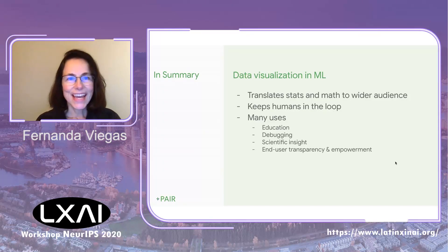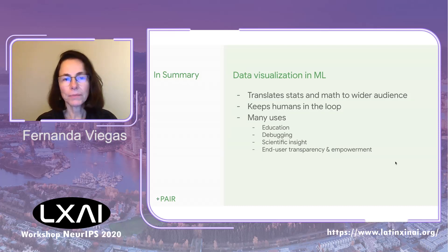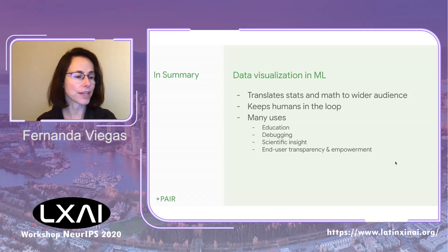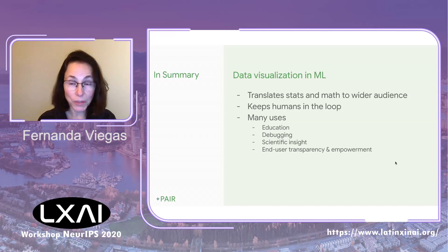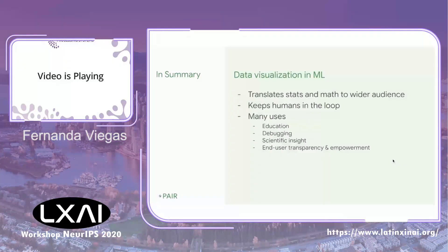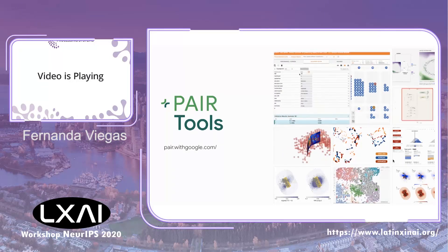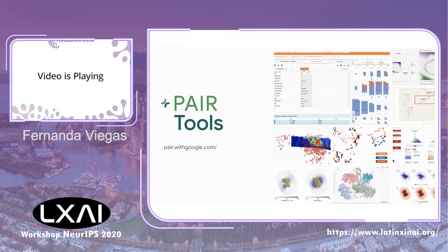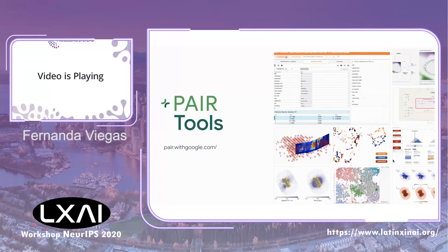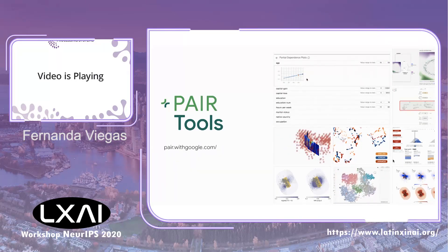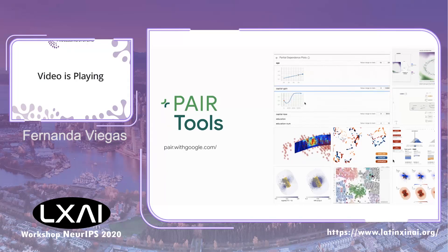In summary, why might we want data visualization in machine learning and explainability? Because data visualization does a really good job of translating statistics and math to a wider audience. It keeps humans in the loop, and it has many uses as we've seen today. PAIR has a number of open-source visualization tools — please go check them out and be inspired to create your own data visualization and explainability tools.